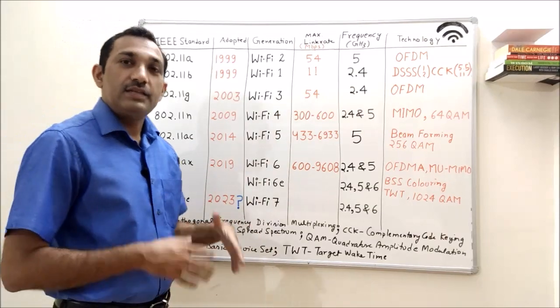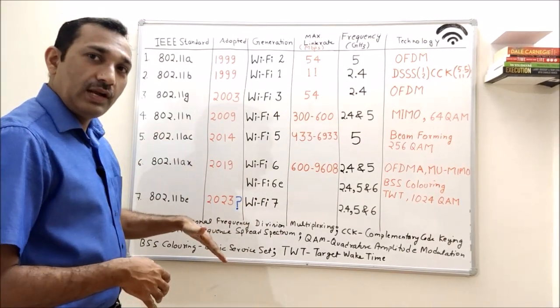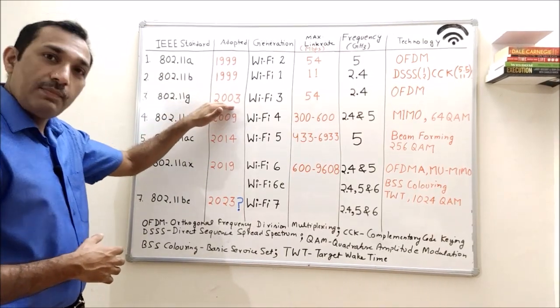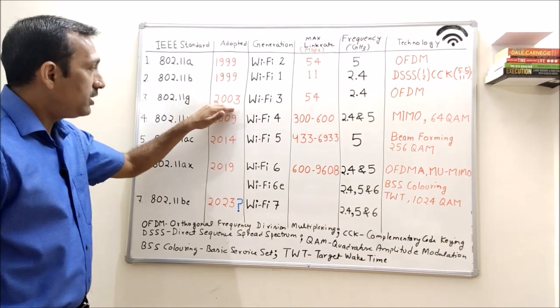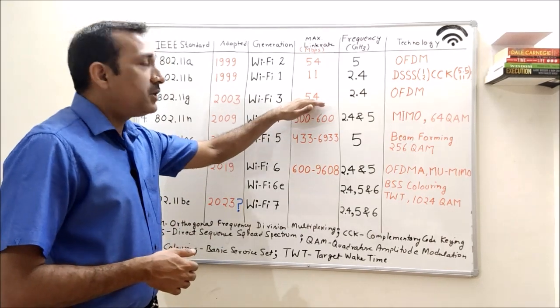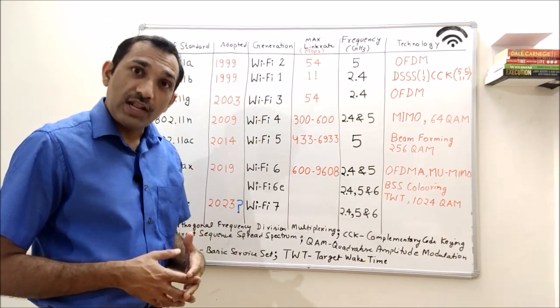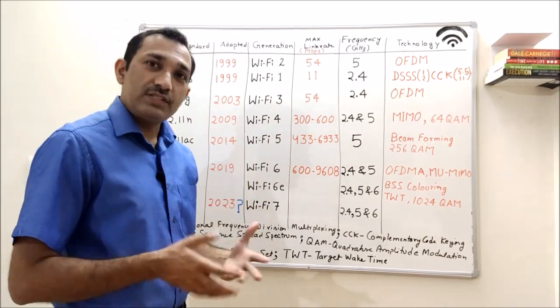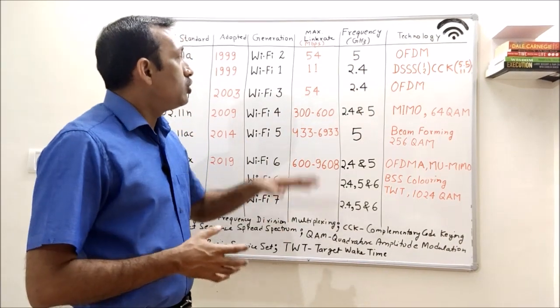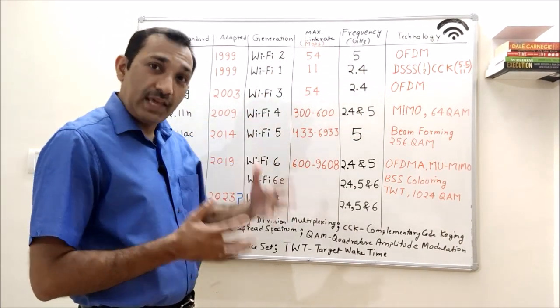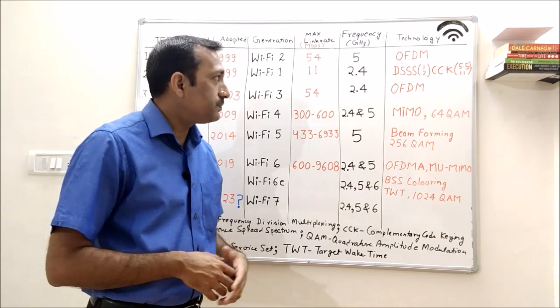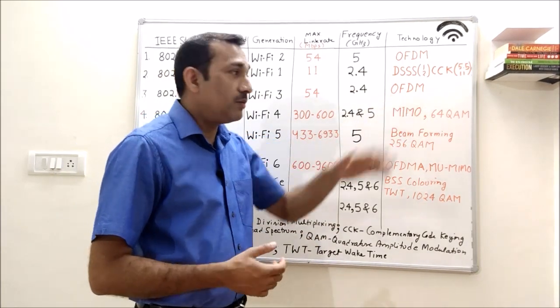After that, it is normal, going as per the adoption. Next one was 11G which came into adoption in 2003 and now it is called Wi-Fi 3. It also had 54 Mbps data rate. Then what was special? Special was 54 Mbps was achieved on 2.4 GHz. That means we had throughput like 5 GHz or 11A on the 2.4 GHz band. That means wider coverage, and we moved to OFDM modulation.